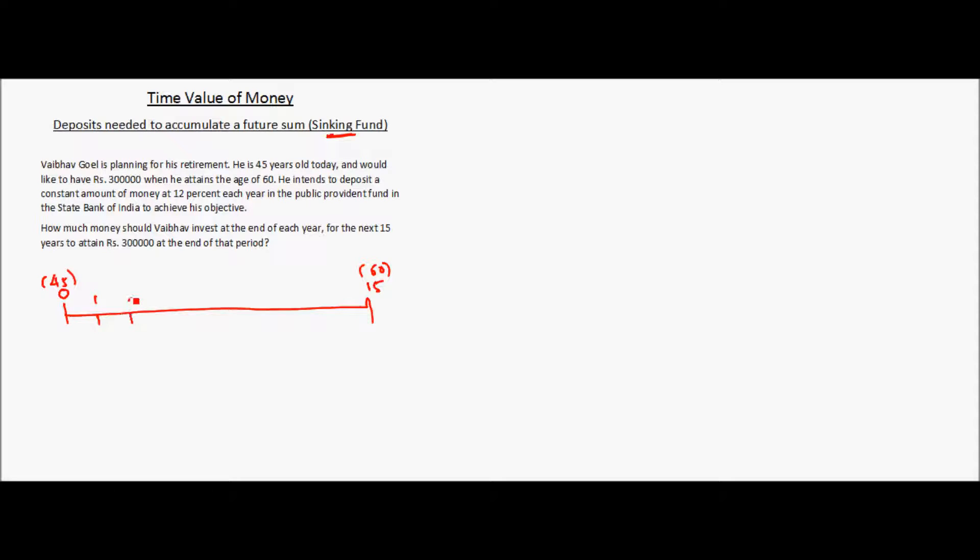We have 1, 2, 3, 4, and so on. At the end of 15 years, Vabhav wants to get an amount of rupees 300,000.